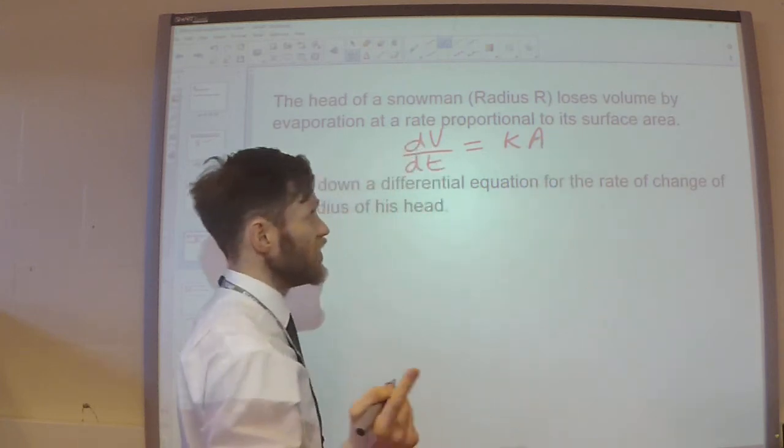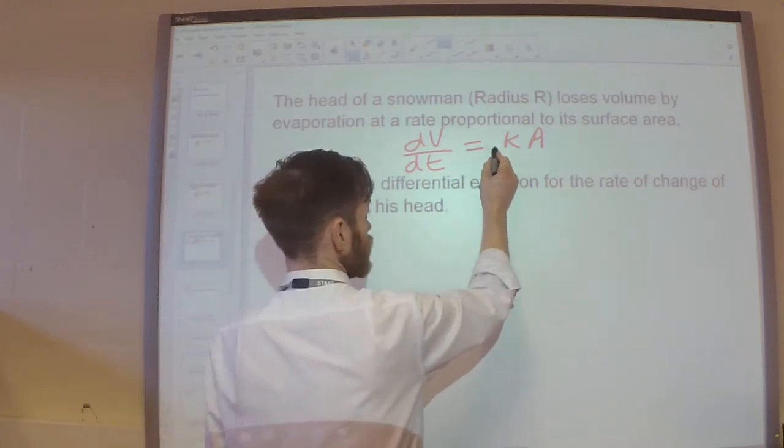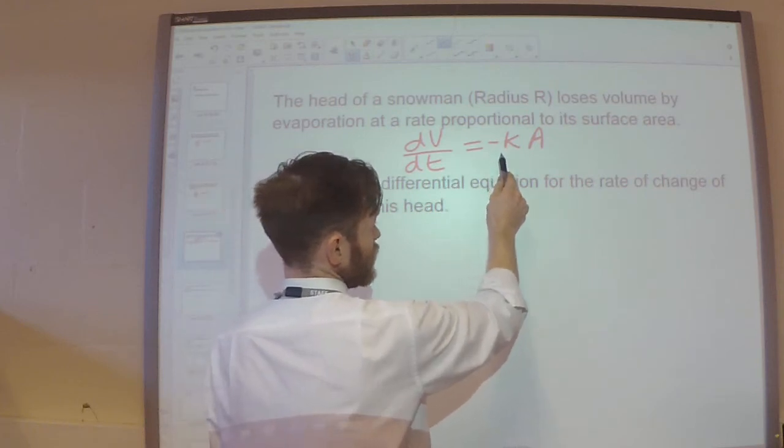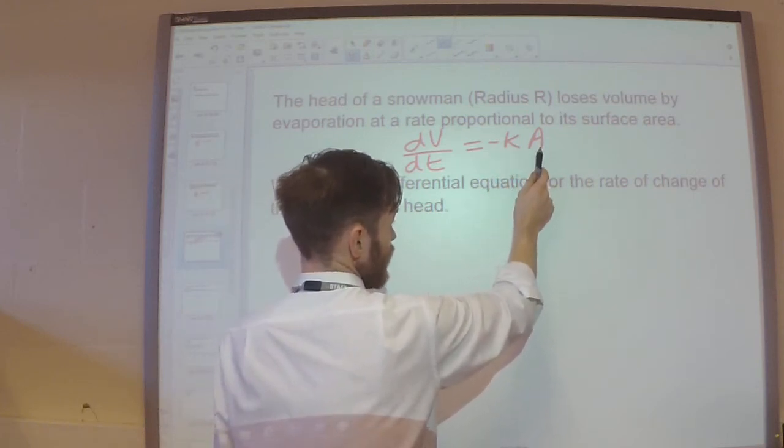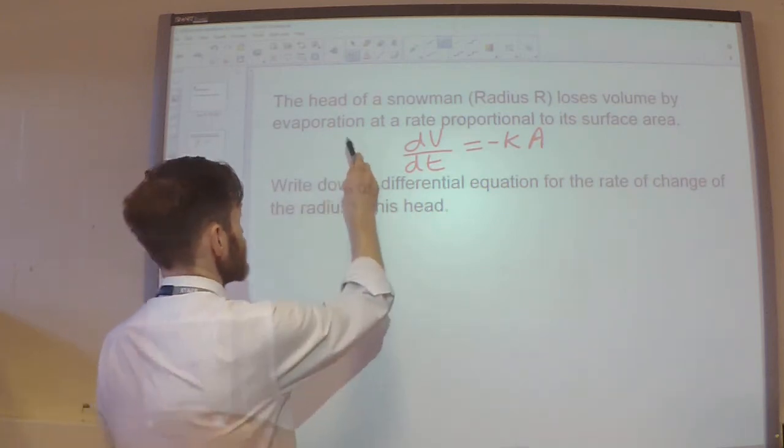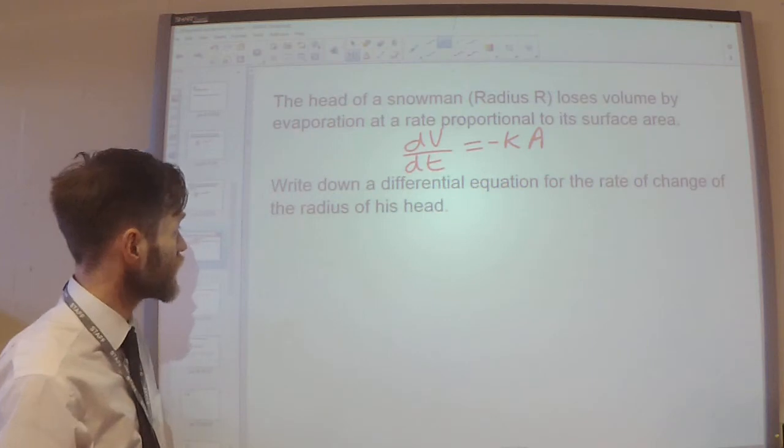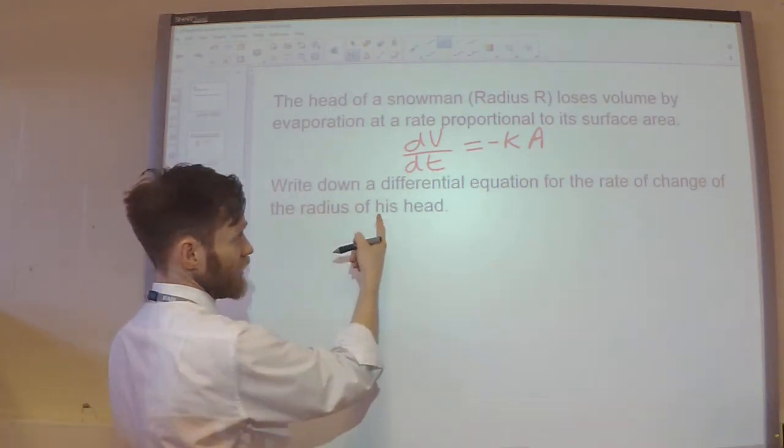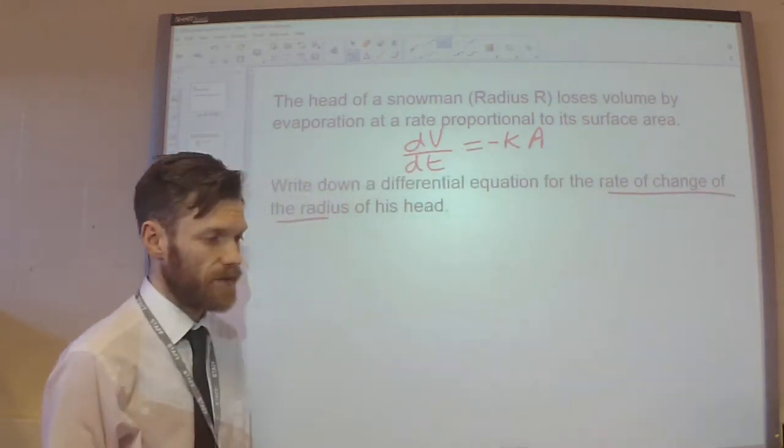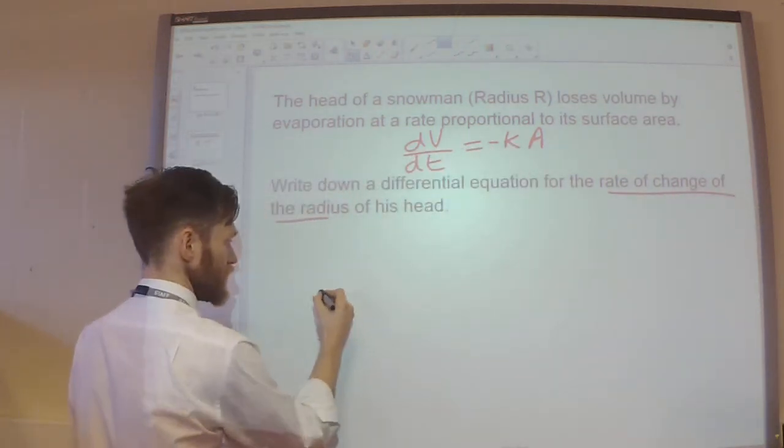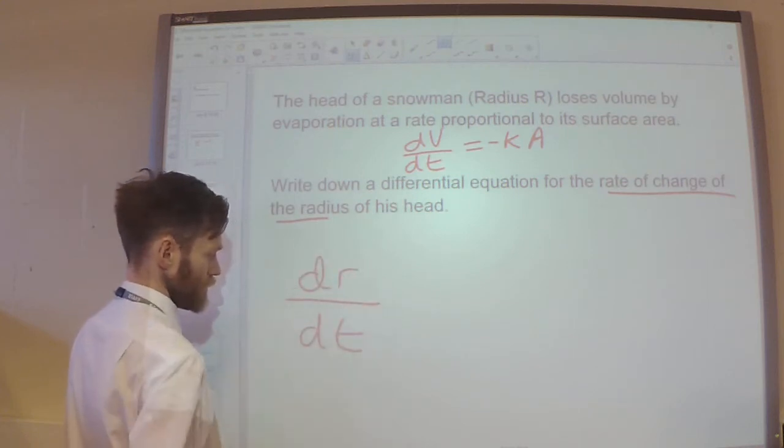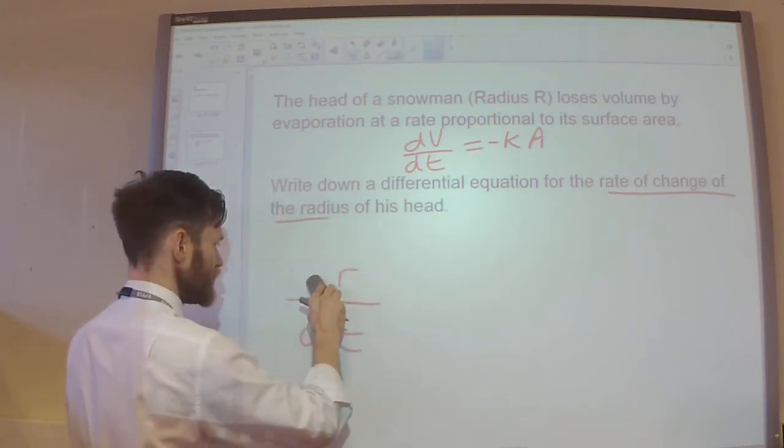But, it's losing volume, so this should be negative. So, the rate of change of the volume is proportional to the surface area, but it's negative because it's losing volume. So, this is turning that sentence into an equation. The question says, write down a differential equation for the rate of change of the radius. Right. So, the rate of change of the radius, I want dr by dt, the rate of change of the radius.